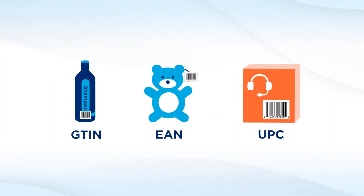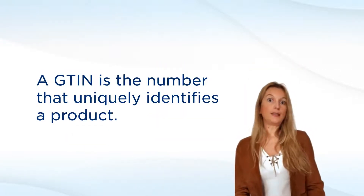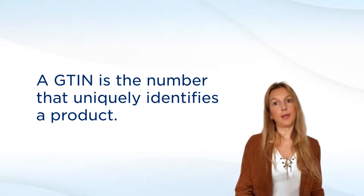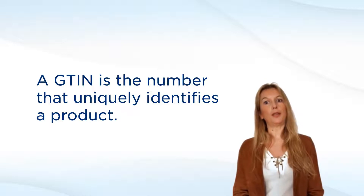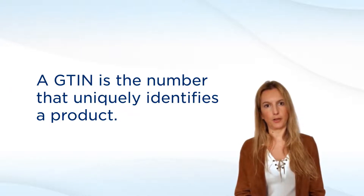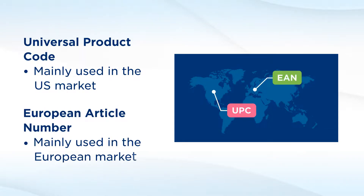There are some tiny differences, however. Let's look at those. A GTIN is the global trade item number and it is the correct term to use when referring to the number that uniquely identifies a product. A UPC can be expected in the US market, where the term was primarily used, and an EAN mainly in Europe. Those names still persist.